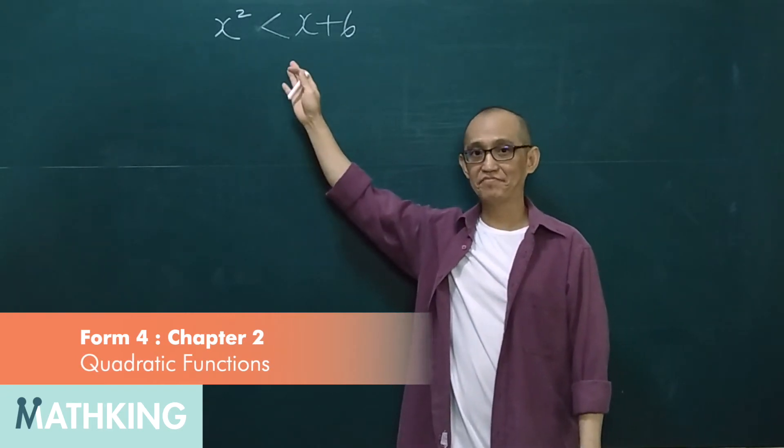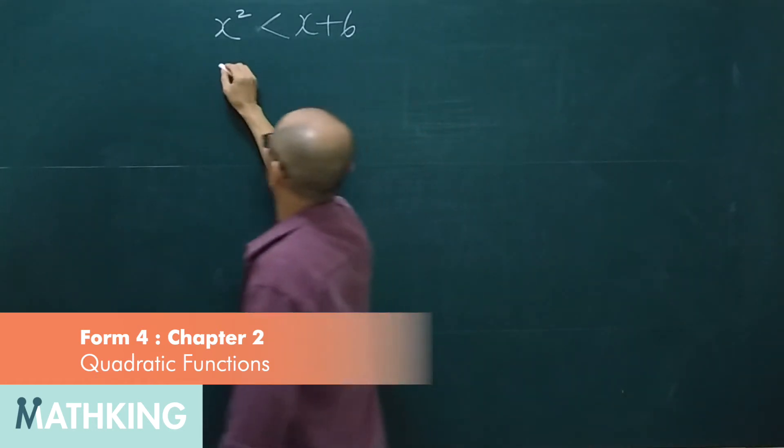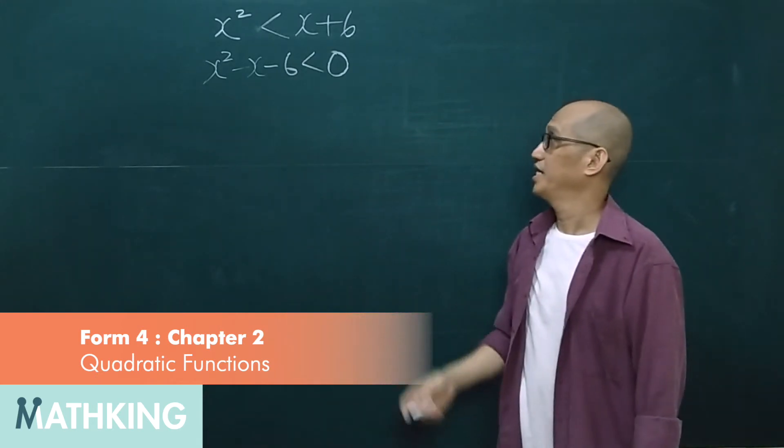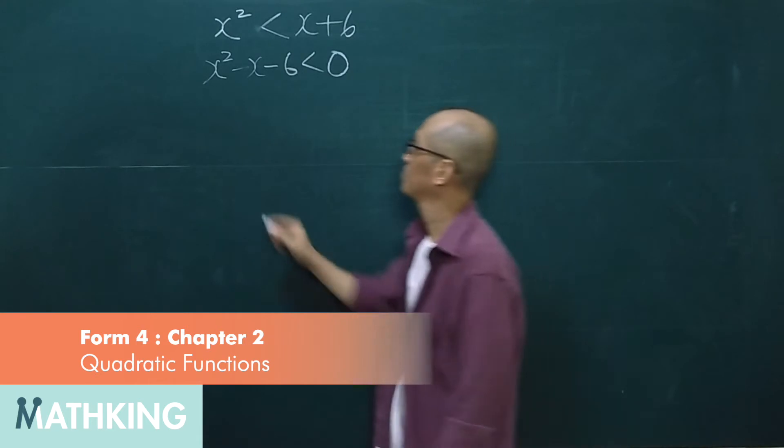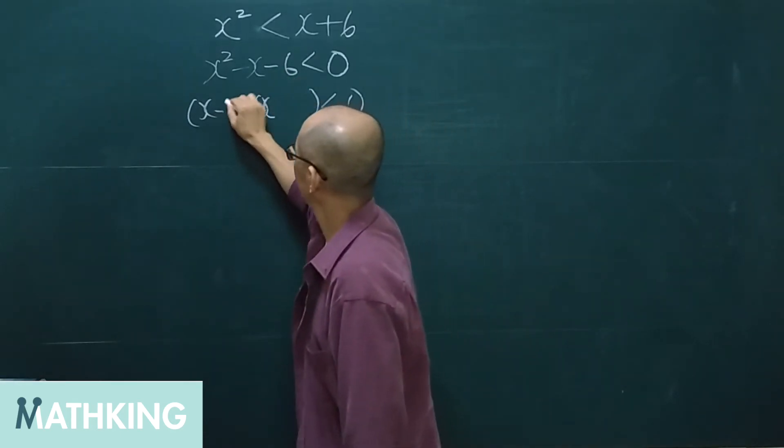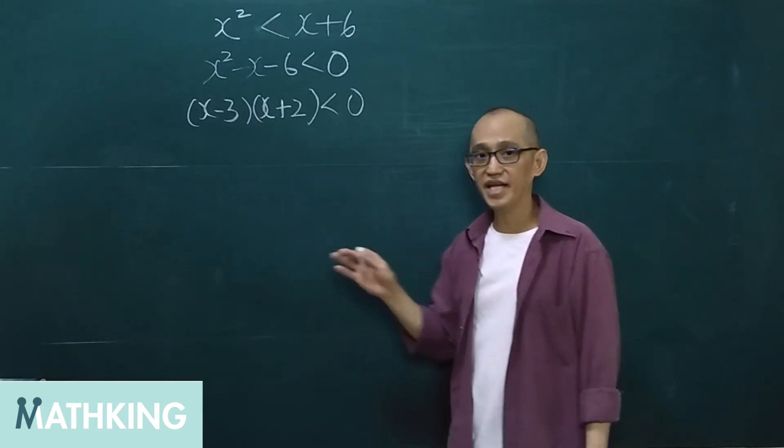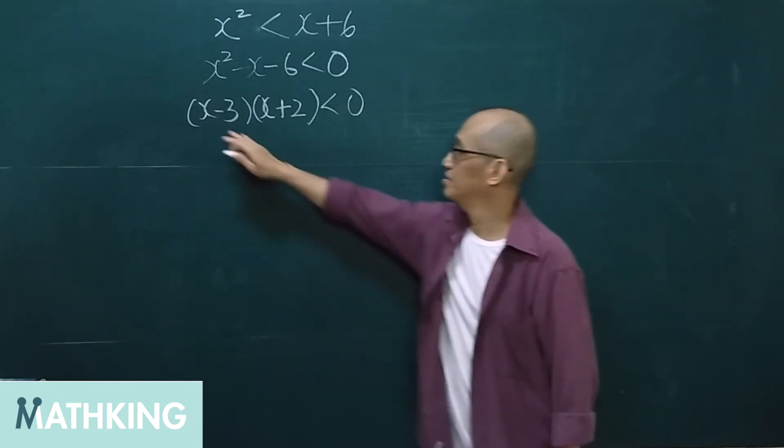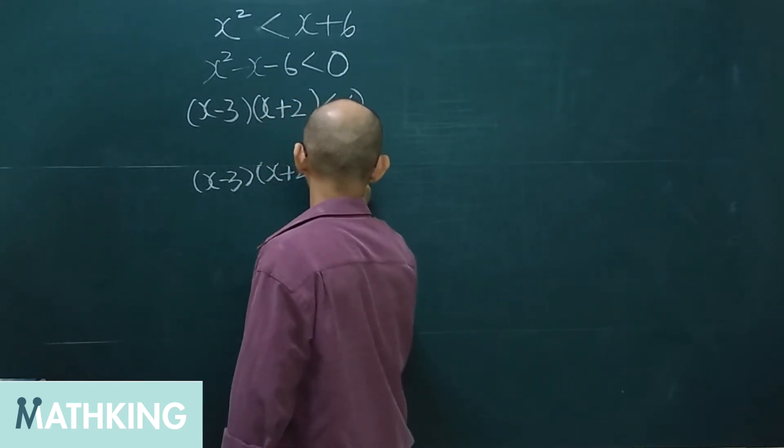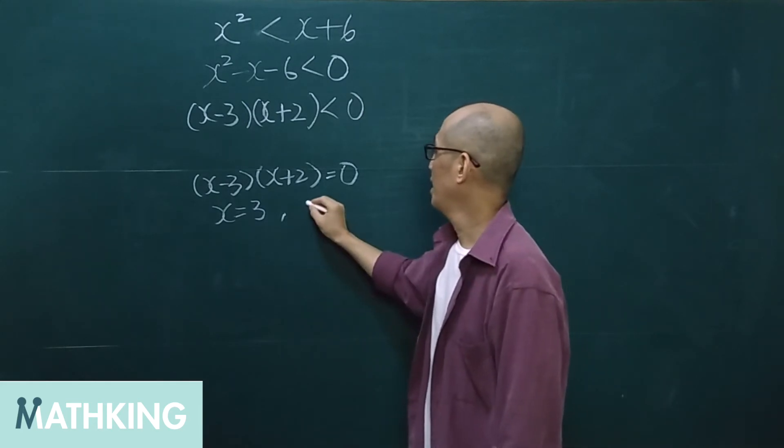Right, so we want to solve for x. Step number one, we are going to move x plus 6 to the left hand side, and then we are going to factorize this. Negative 6, so we get negative 3 and plus 2. And then we want to find the value of x when this expression equals 0. So what we get here is x equals 3 and also x equals negative 2.